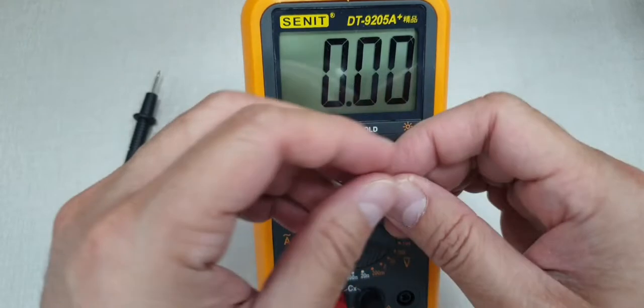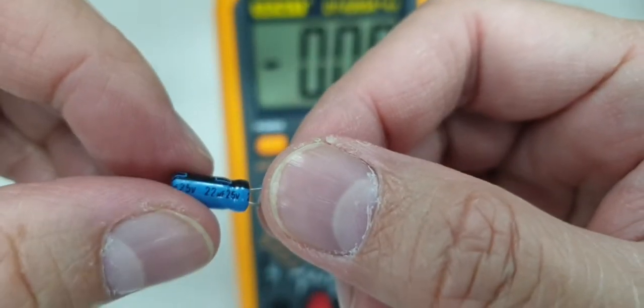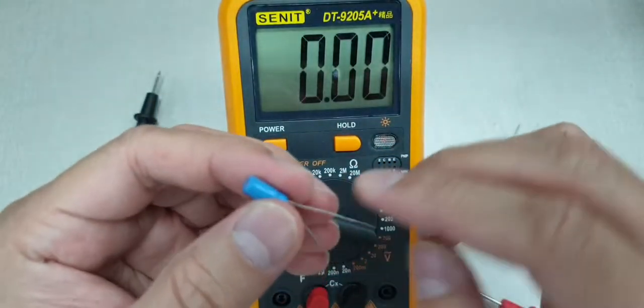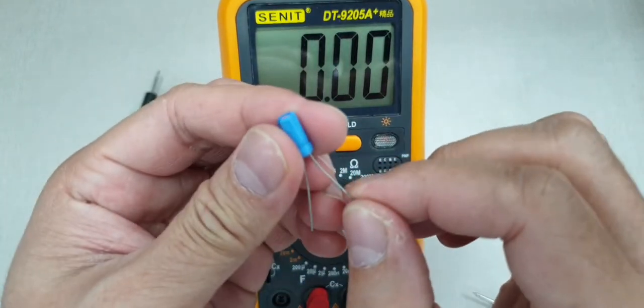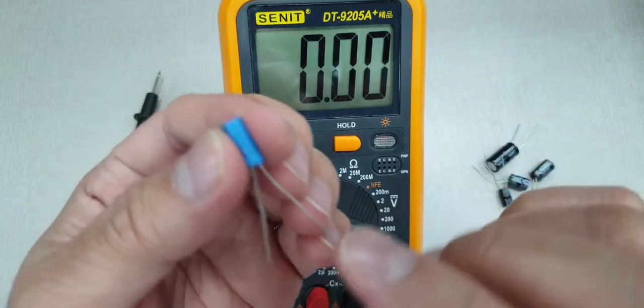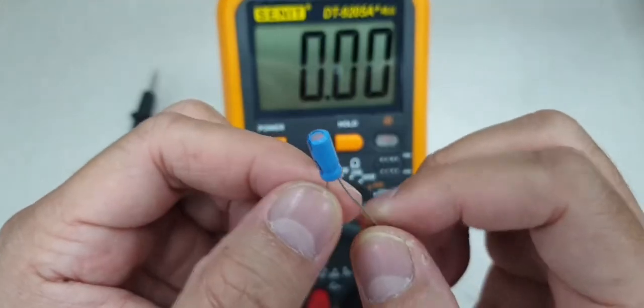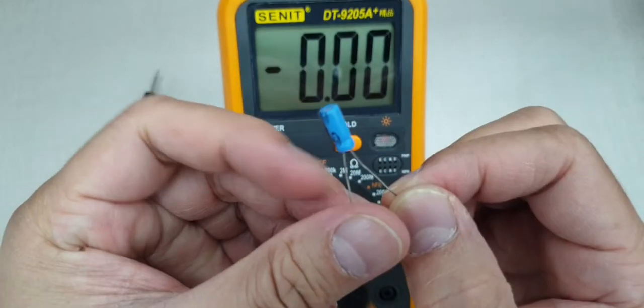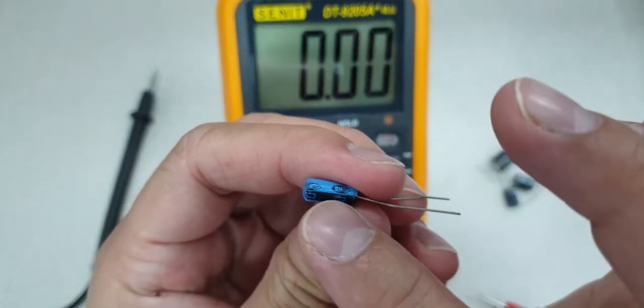Let's try and check this capacitor. It says 22 microfarad, 25 volt. One thing peculiar about electrolytic capacitors is that their feet are not equal in size, in length. The negative part is always shorter while the positive part is always longer. Usually the negative side is marked with negative or this black line here.